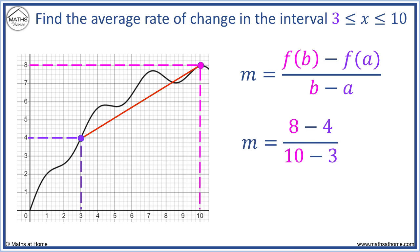Substituting f of B equals eight, f of A equals four, B equals ten, and A equals three, we obtain the following: eight minus four equals four, and ten minus three equals seven. The average rate of change is approximately 0.571.